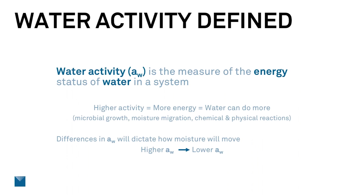So how does this relate to water activity? Water activity is a principle of thermodynamics and follows the same rules. Water activity, denoted as A sub W, is the measure of energy status of water in a system. It is denoted as A for activity, sub W for the water. If we have a higher activity, that also equals more energy, and the water can do more. The work here is microbial growth, moisture migration, and chemical and physical reactions.